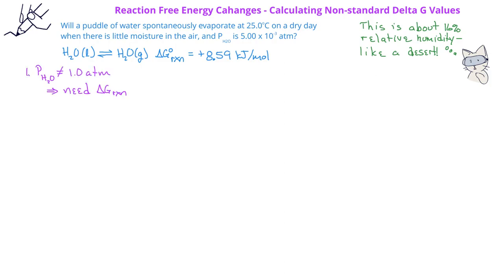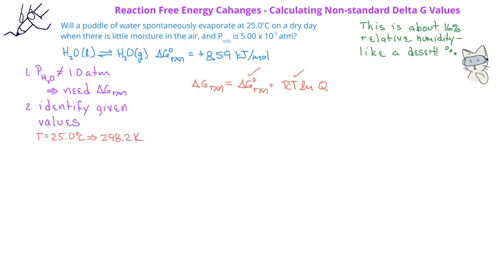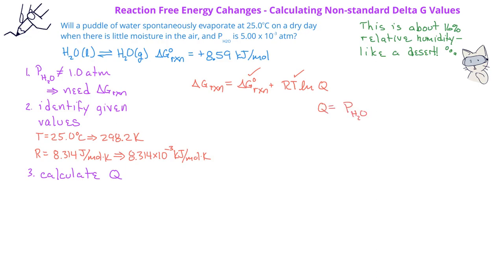That means that in order to answer the spontaneity question, we need to find the free energy change under this non-standard condition: delta G reaction equals delta G° reaction plus RT ln Q. The standard free energy change is given; the temperature is given and needs to be converted to Kelvin; and R is known but needs to be converted from joules to kilojoules. The reaction quotient Q equals the pressure of water in the gas phase — we ignore the liquid phase in equilibrium expressions. Therefore, Q is 5.00 times 10 to the negative 3.